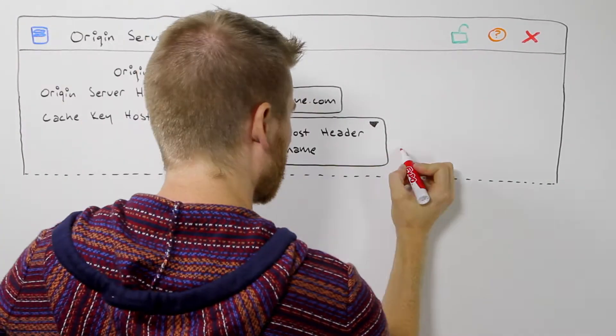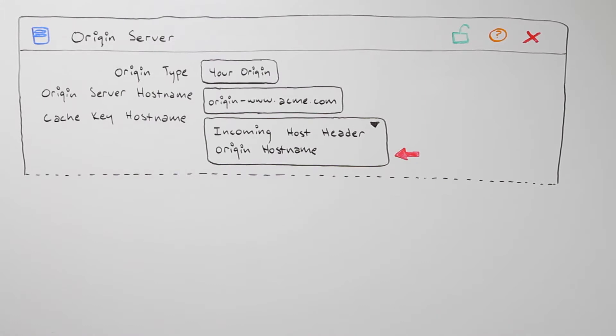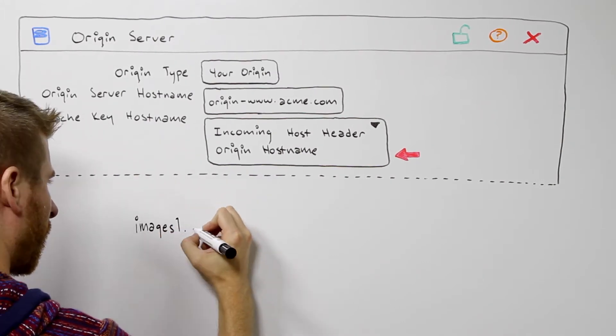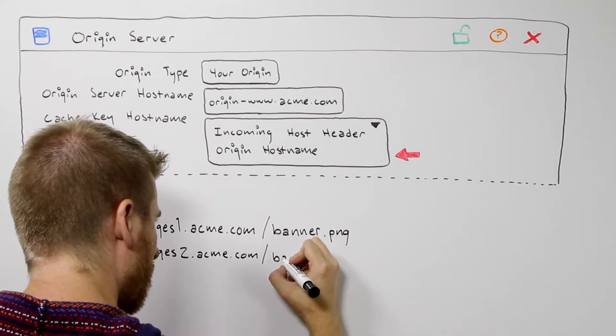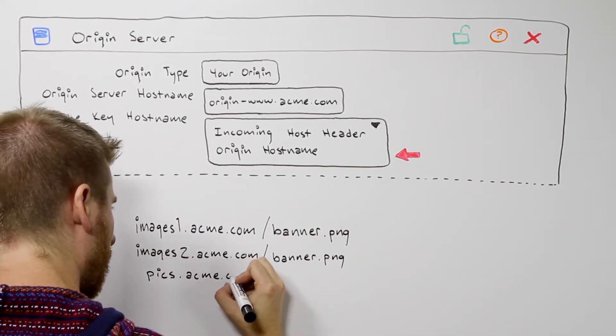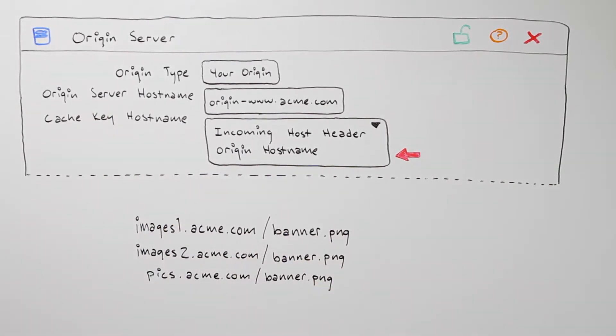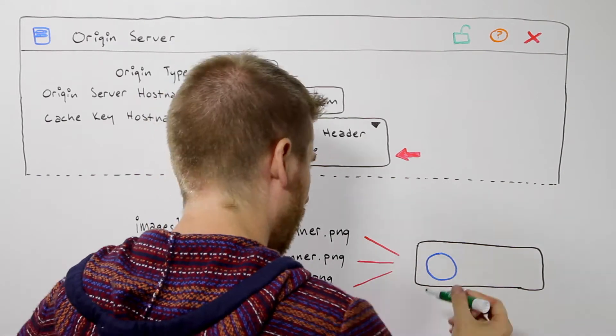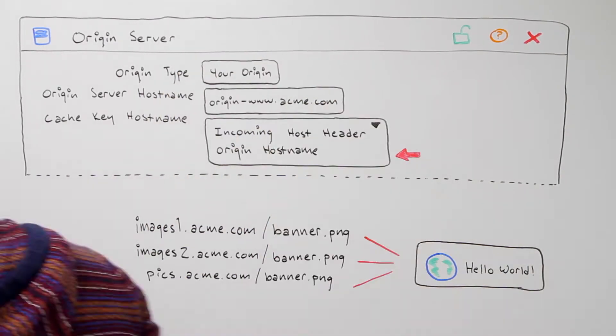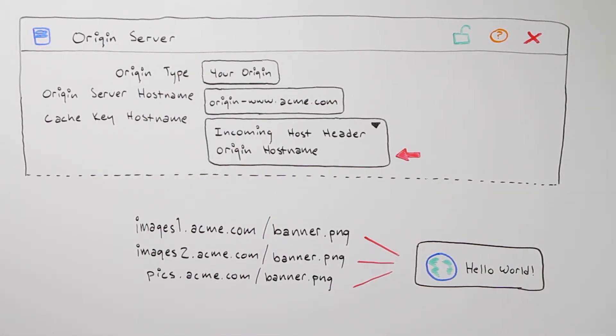Now, let's say you have multiple hostnames that all serve the exact same content. You might be doing this for domain sharding reasons or simply because you have multiple online properties that serve similar content. In this example, you would want to set the cache key to origin hostname, so Akamai Edge servers treat all objects under these hostnames the same and only cache one copy of each file.